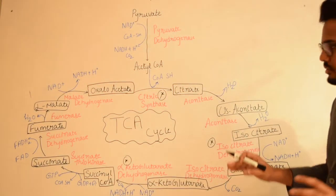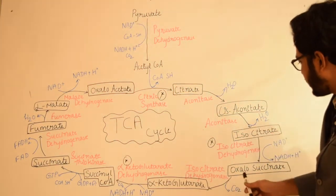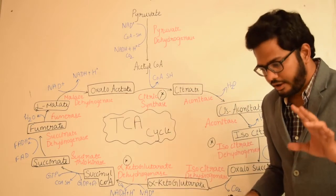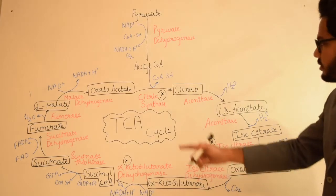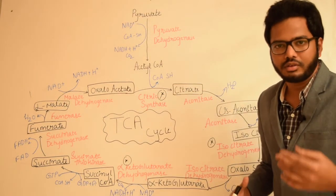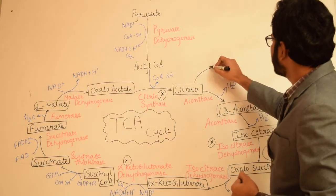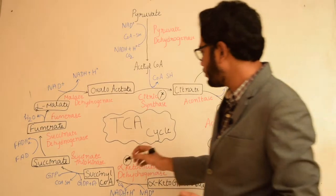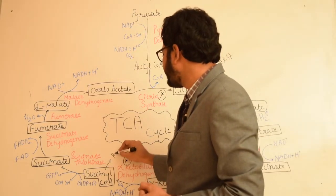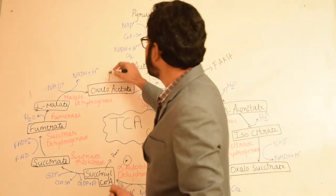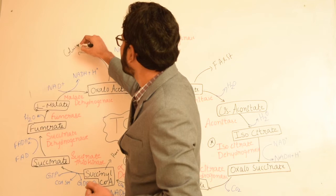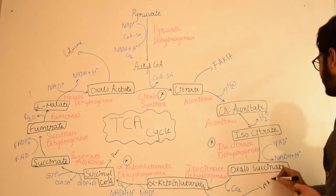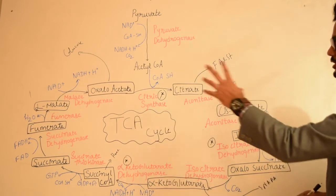This is an amphibolic cycle because acetyl-CoA is converted into carbon dioxide and water through oxidation, and simultaneously various intermediaries lead to biosynthesis of other molecules. Citrate leads to biosynthesis of fatty acids and steroids; succinyl-CoA leads to biosynthesis of heme and porphyrins; oxaloacetate is essential for biosynthesis of glucose; and alpha-ketoglutarate is essential for biosynthesis of various non-essential amino acids.